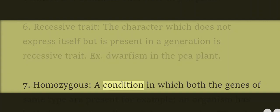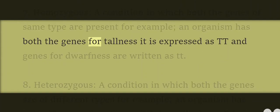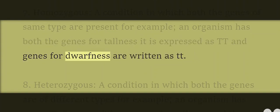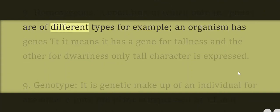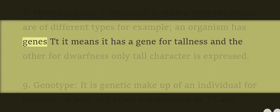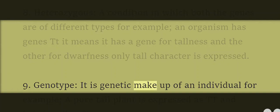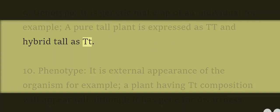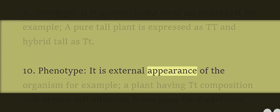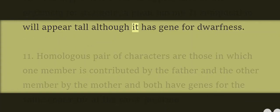7. Homozygous: A condition in which both genes of the same type are present. For example, an organism has both genes for tallness expressed as TT, and genes for dwarfness written as tt. 8. Heterozygous: A condition in which both genes are of different types. For example, an organism has genes Tt — it has a gene for tallness and another for dwarfness, but only the tall character is expressed. 9. Genotype: The genetic makeup of an individual, e.g., a pure tall plant is expressed as TT and hybrid tall as Tt. 10. Phenotype: The external appearance of an organism, e.g., a plant having Tt composition will appear tall although it has a gene for dwarfness.